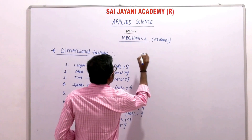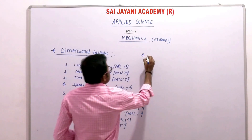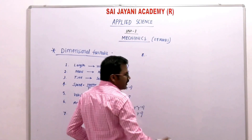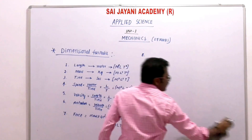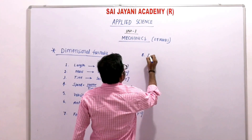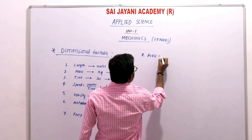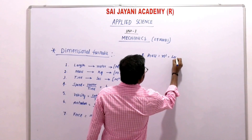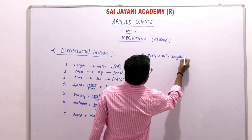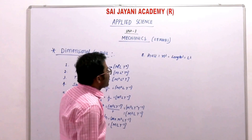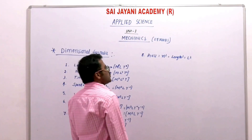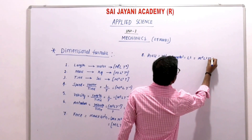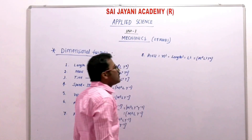Next, area. The SI unit of area is meter square. Meter square means length squared, so it is L². There is no mass and no time involved. Therefore the dimensional formula for area is M⁰ L² T⁰.